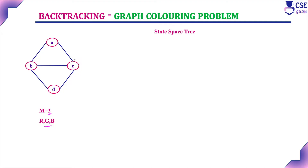So, what is the graph coloring problem? Graph coloring problem is nothing but we need to assign a color to each vertex such that no two adjacent vertices should be assigned the same color. That is the constraint here, and this graph coloring problem we can implement using backtracking technique by constructing the state space tree.